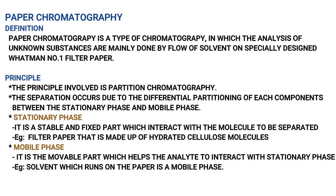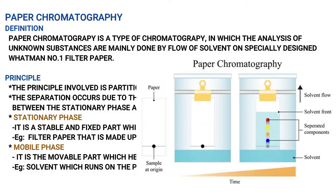The definition of chromatography: paper chromatography is a type of chromatography in which the analysis of unknown substances is mainly done by flow of solvents on specially designed Whatman No.1 filter paper. Paper chromatography is one of the chromatographic techniques. Whatman No.1 filter paper is the supporting medium, and the solvent develops and separates the mixture of components.